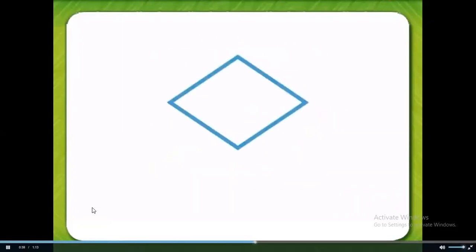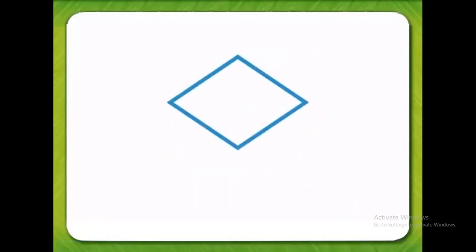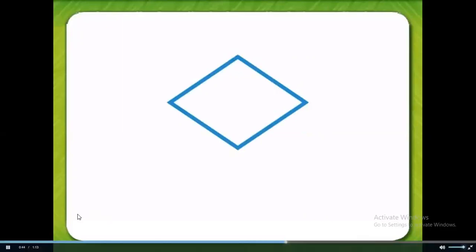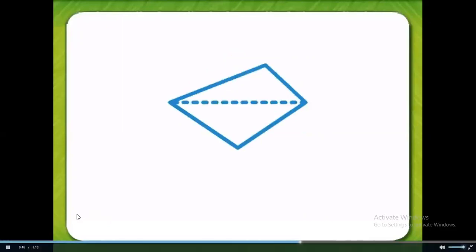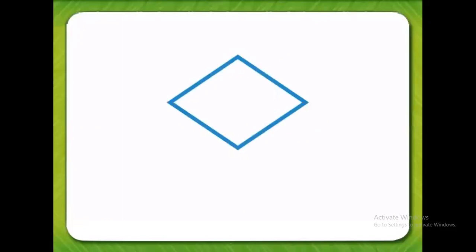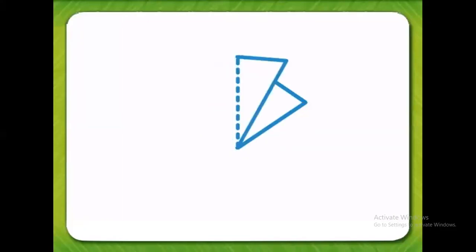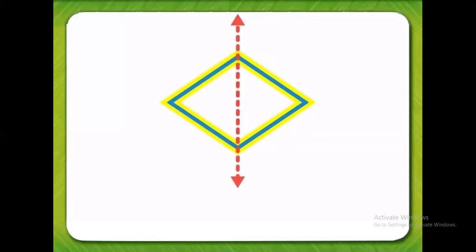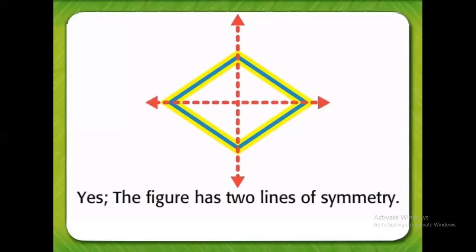Does this figure have line symmetry? We'll fold the figure in half and trace the fold. Yes, this figure has line symmetry — the top half is an exact match to the bottom half. Now let's fold the figure in half a different way. The two halves are exact matches. This figure has two lines of symmetry.